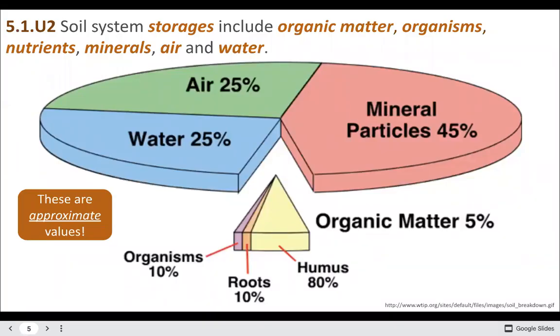Some storages in the soil system include organic matter, organisms, living things, nutrients, NPK, minerals, air, and water.